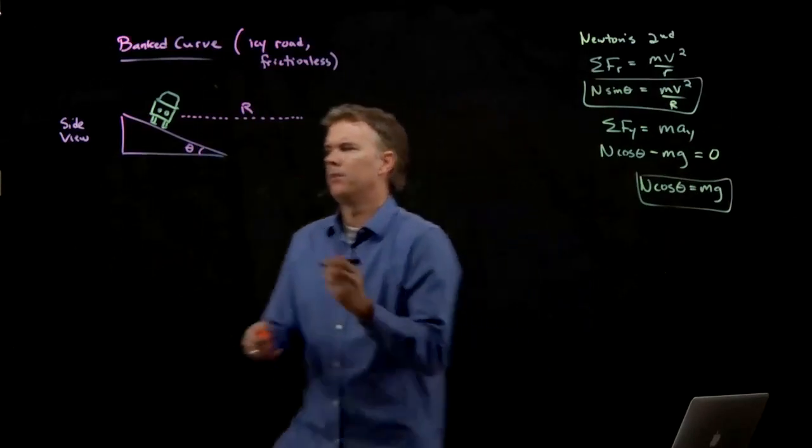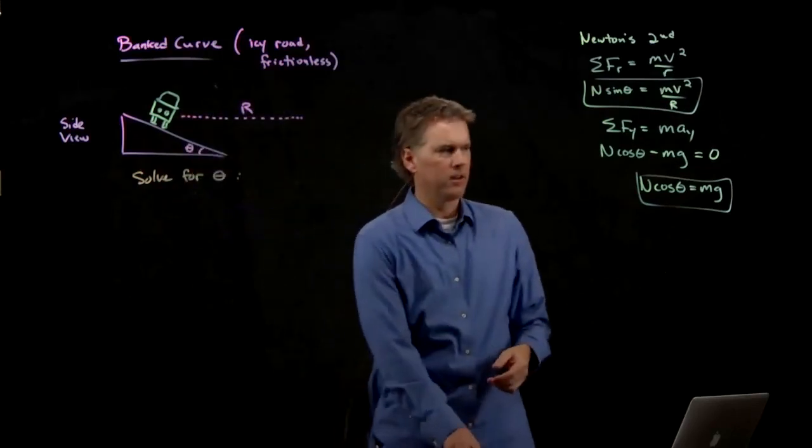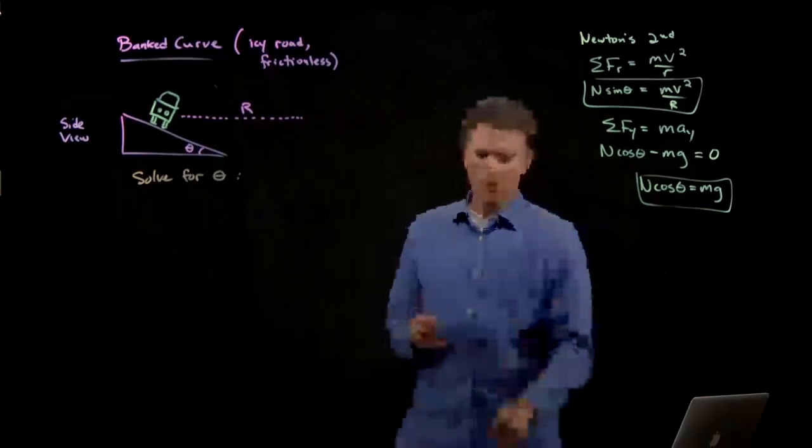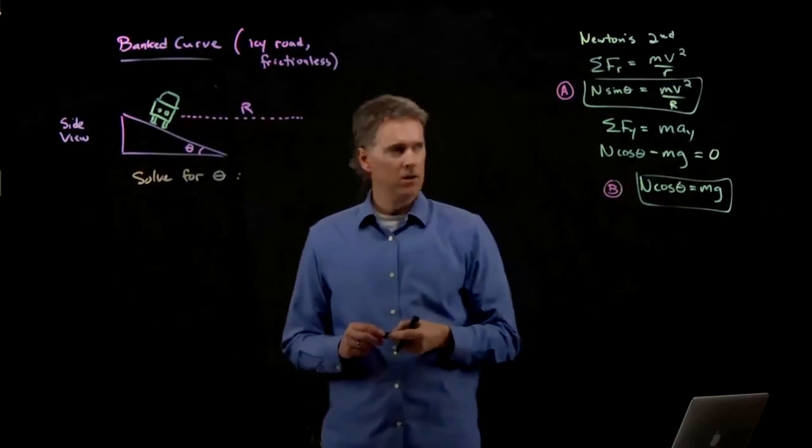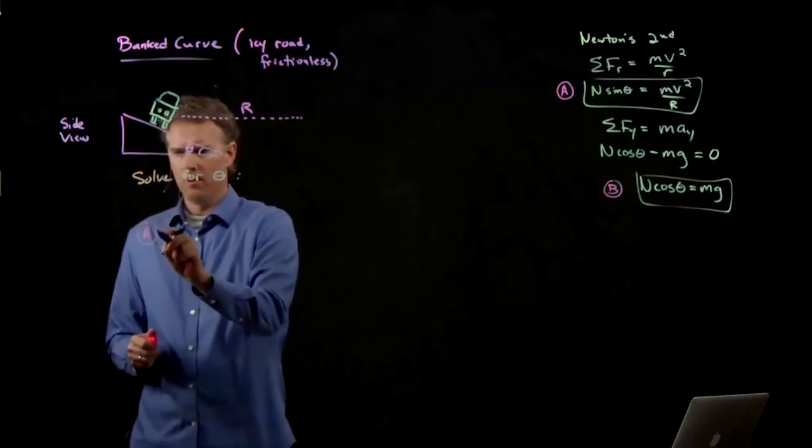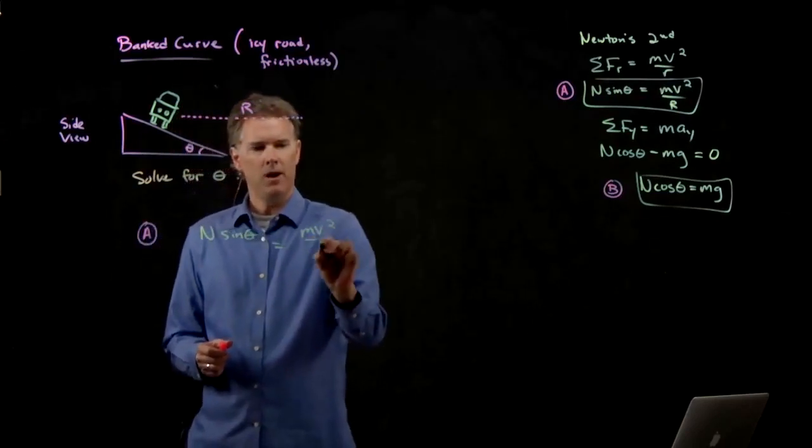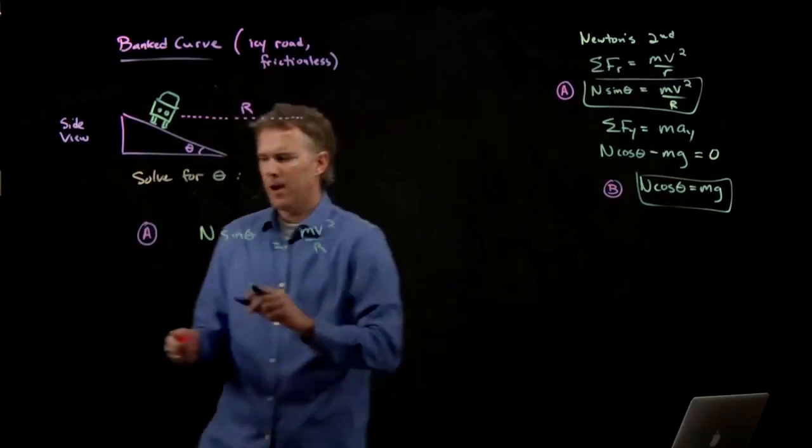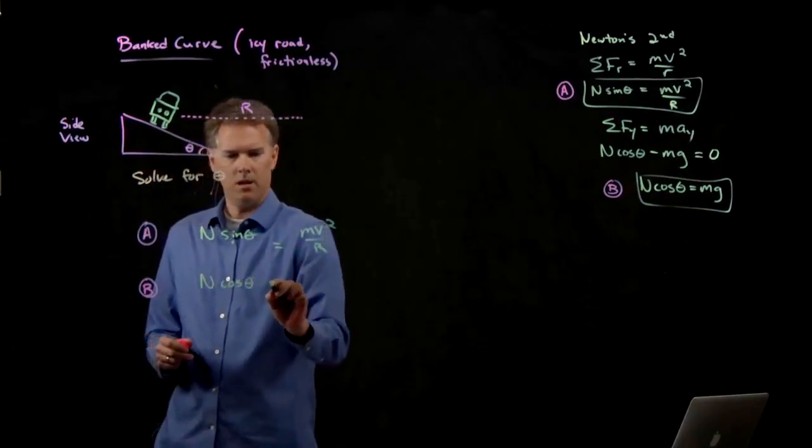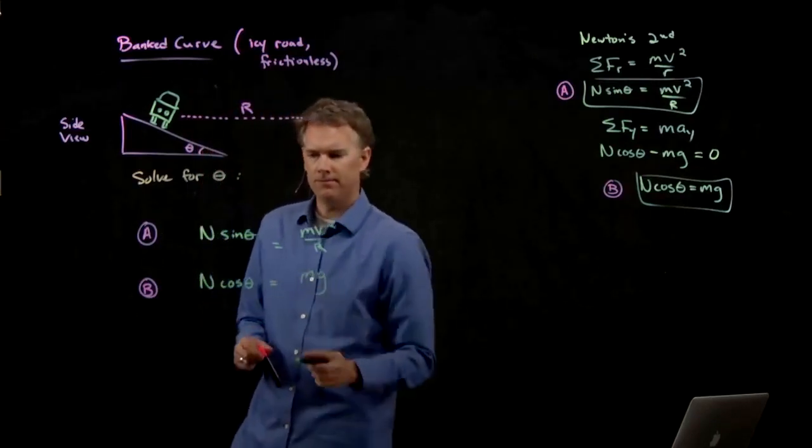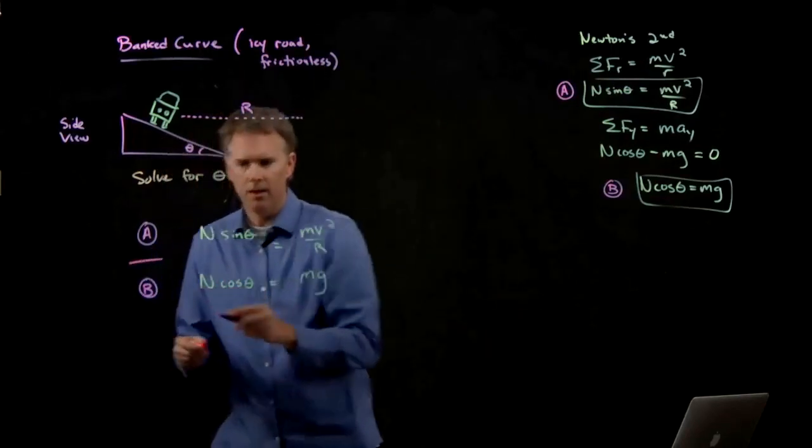So let's say that we want to solve for theta. How do we solve this thing for theta? Well, we've got equation A right there. We've got equation B right there. If I write equation A over here, we said it is n sine theta equals mv squared over r. If I write equation B, I get n cosine theta equals mg.